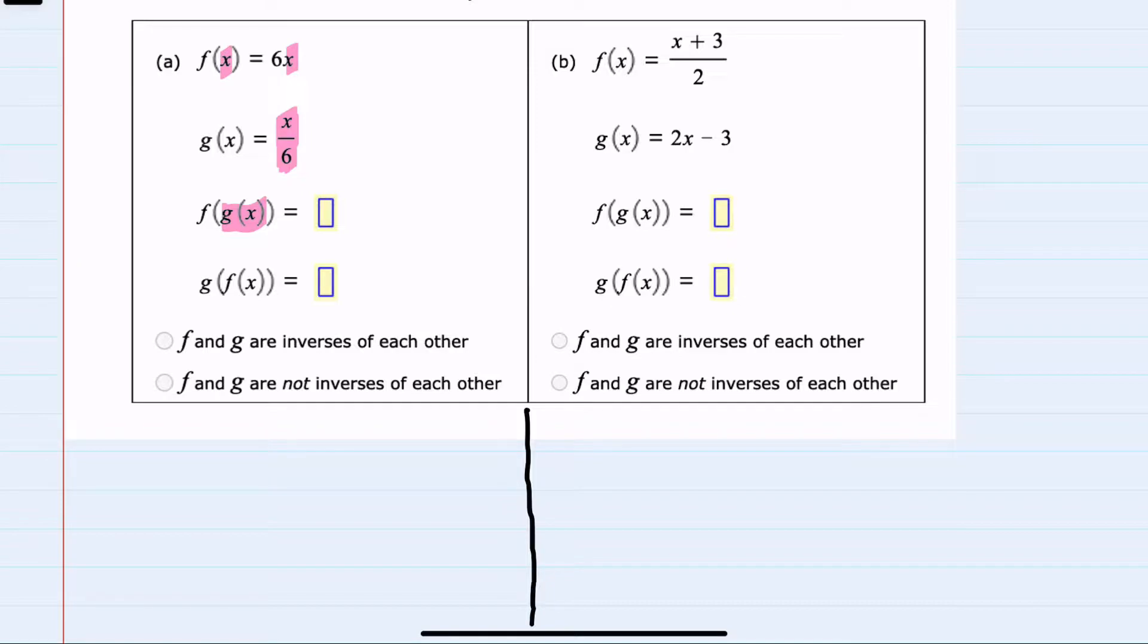So what does that look like? f of g of x. Again, replacing the x in f of x with g of x means f will be 6, instead of times x, it will be times g of x, which is x over 6. This can then be simplified. These sixes are actually going to cancel, leaving me with just x. So f of g of x is x.